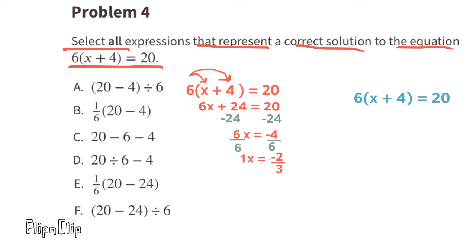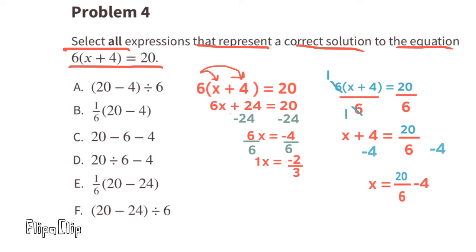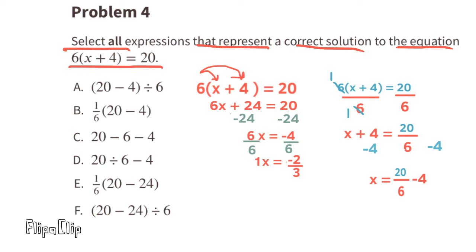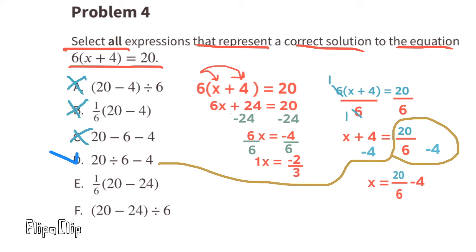We could also solve by dividing both sides by 6 first. 6 times (x plus 4) divided by 6 gives x plus 4, and 20 divided by 6 gives 20 over 6. Subtract 4 from both sides: x equals 20 over 6 minus 4, which is the same as 20 divided by 6 minus 4. Option A is eliminated because 20 minus 4 divided by 6 differs from 20 divided by 6 minus 4. Option B is eliminated for the same reason. Option C is eliminated because 20 minus 6 minus 4 is different. Option D is kept because it equals 20 divided by 6 minus 4.